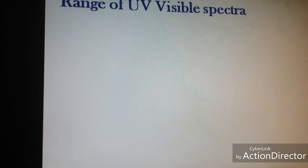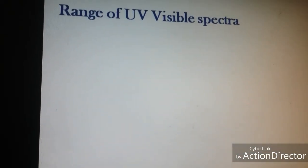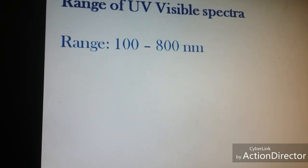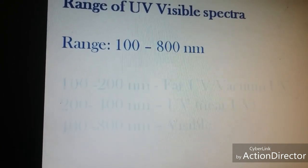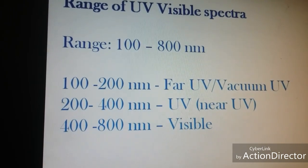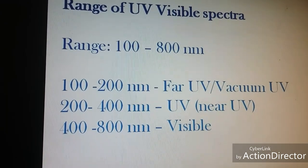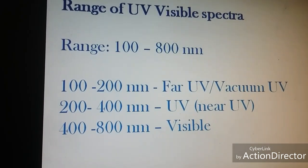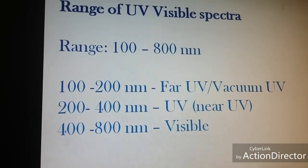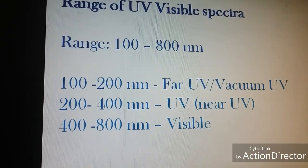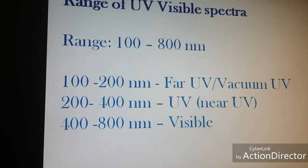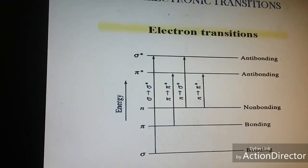Now let us talk about the range of UV visible spectra. UV visible spectra generally range from 100 to 800 nanometers. 100 to 200 nm will be far UV or vacuum UV — it is called vacuum UV because inert gas is passed to create a vacuum. 200 to 400 nm will be near UV and 400 to 800 nm will be the visible spectrum.